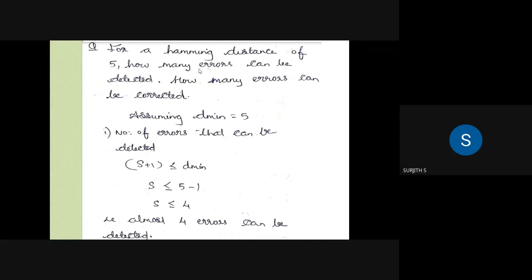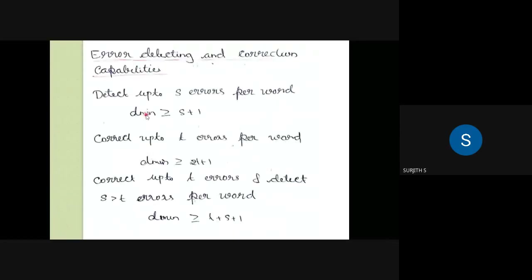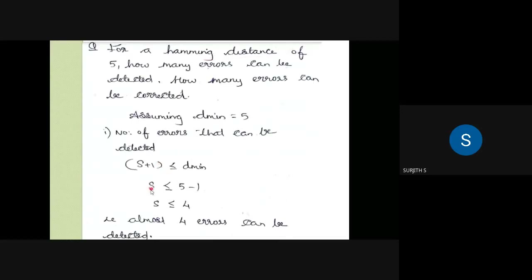If you have the Hamming distance of 5, how many errors can be detected? We can assume that the given Hamming distance is the minimum Hamming distance. The number of errors that can be detected: s plus 1 is less than or equal to D minimum, so s is less than or equal to five minus 1, which gives s less than or equal to 4.